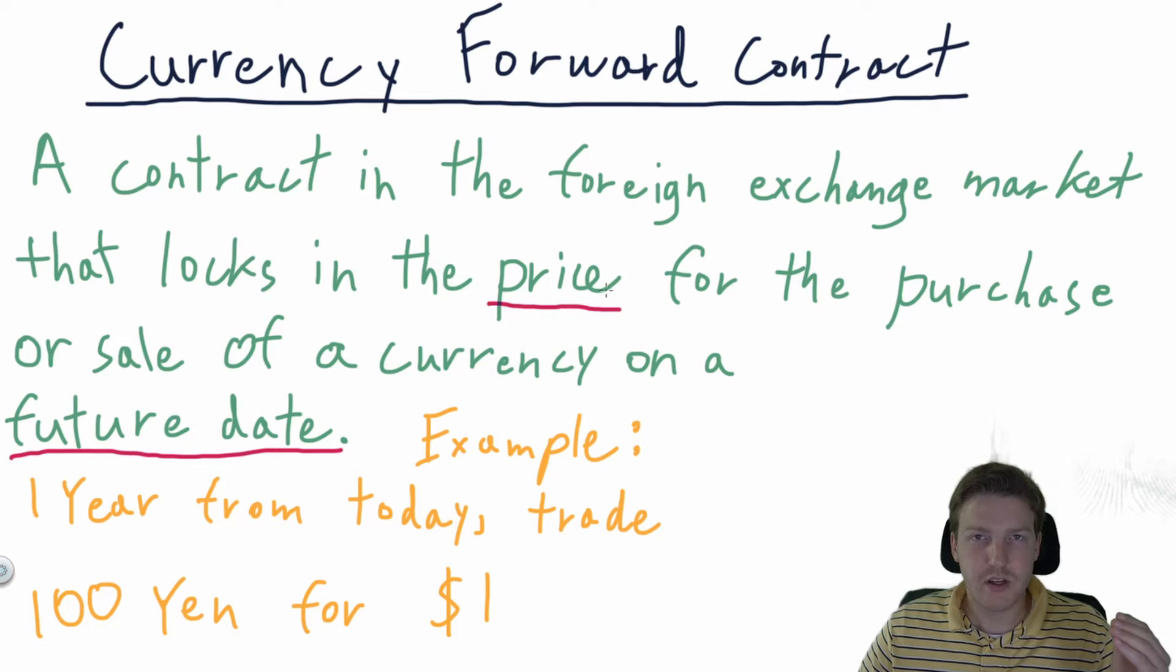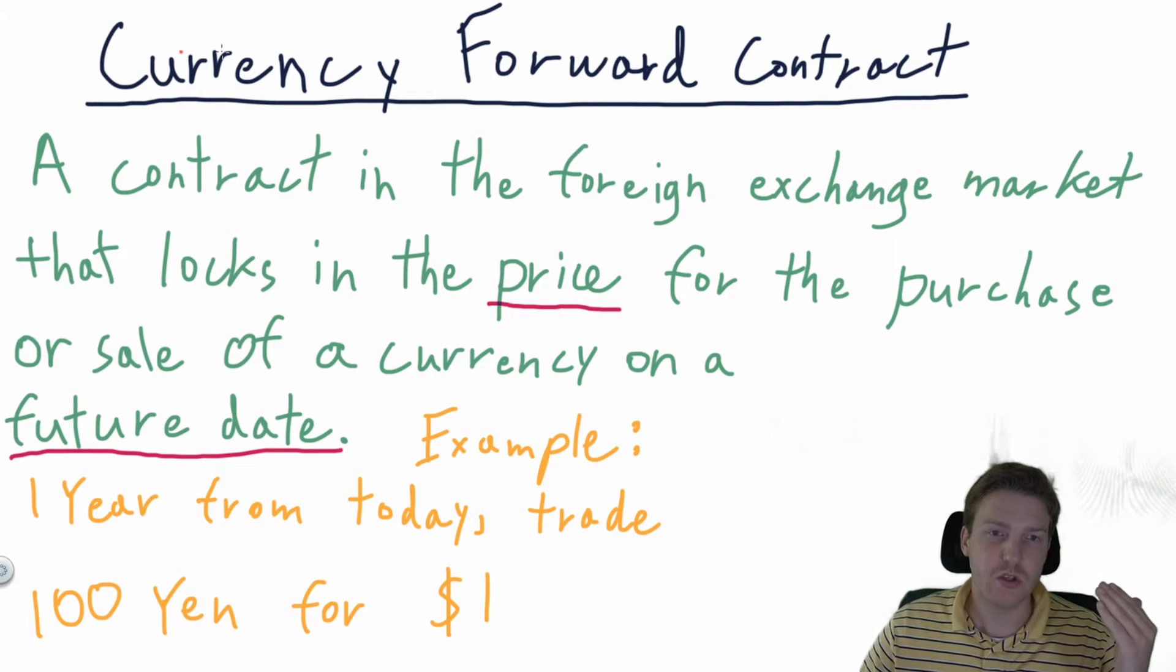So we just talked about in the spot exchange rate market, if I need to trade one currency for another immediately. But what if my needs are different? What if I know that in one year from now, I'm going to want to trade a certain currency for a different currency? Then we would use a currency forward contract. Now let's define that.